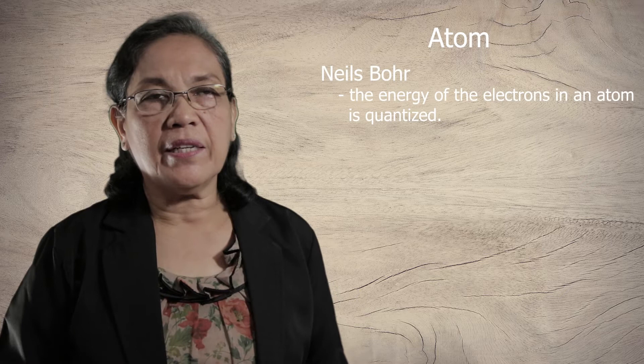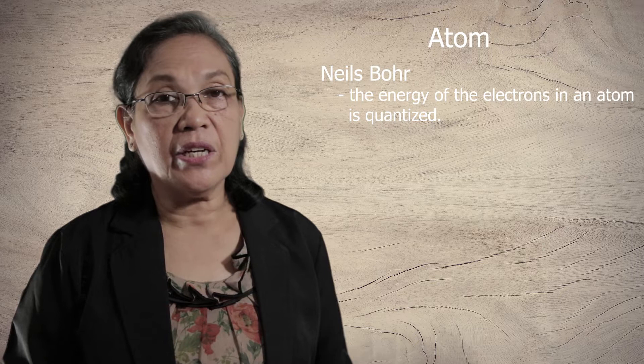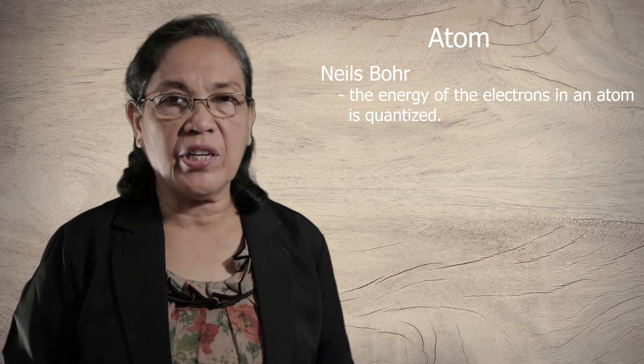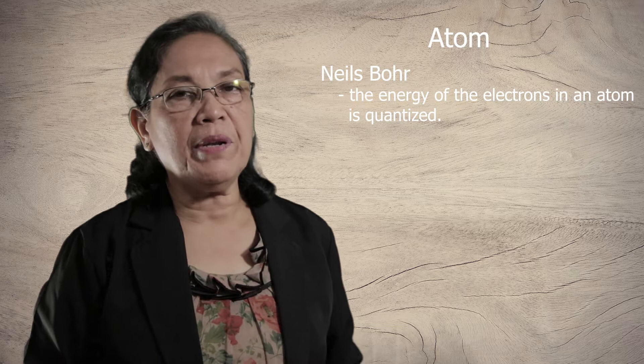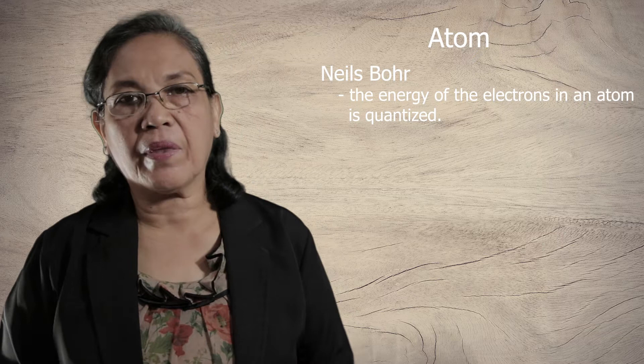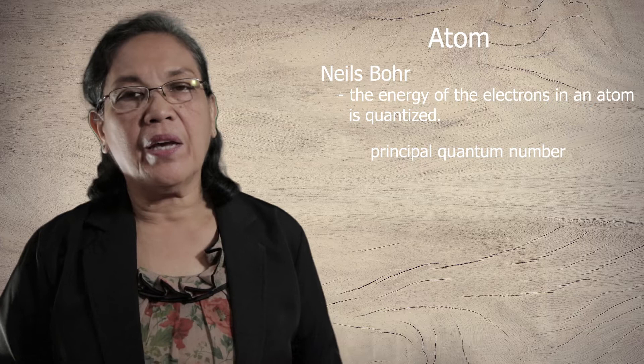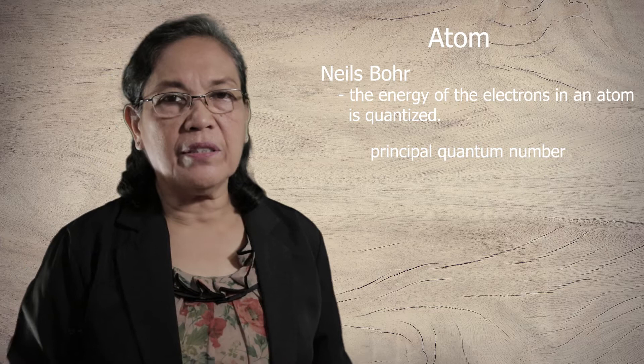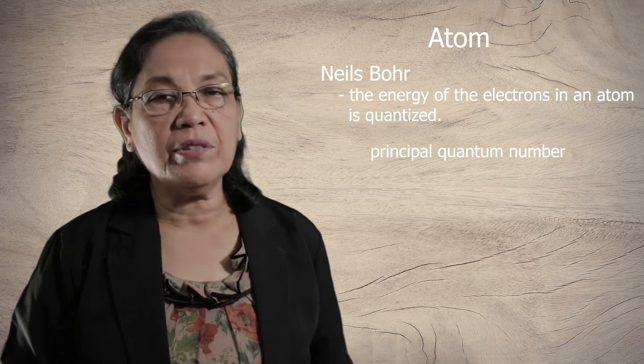Let's go back to the atom. According to Niels Bohr, the energy of the electrons of the atom are quantized. By quantized, it means that these electrons possess an energy described by numbers. There are four quantum numbers that describe the energy of the electrons in an atom.